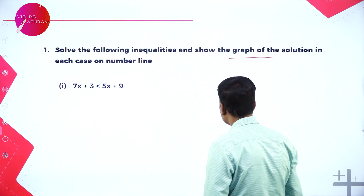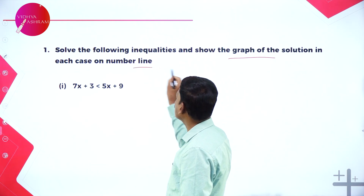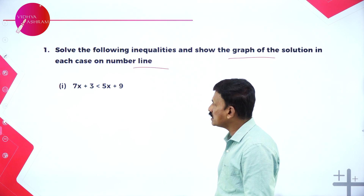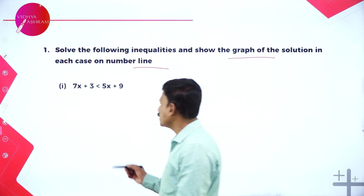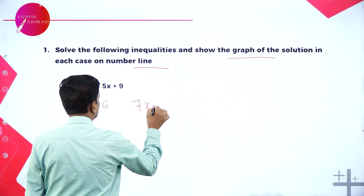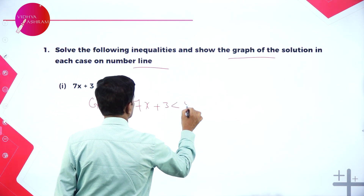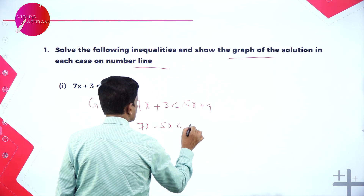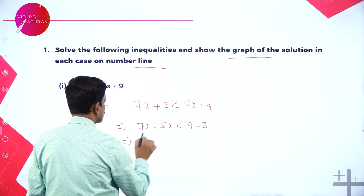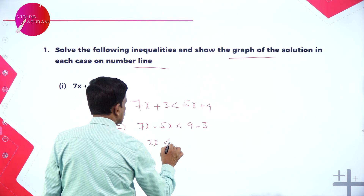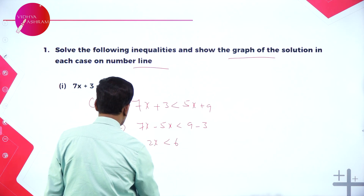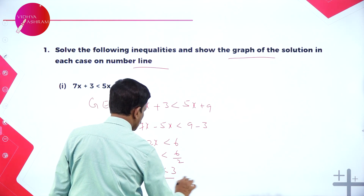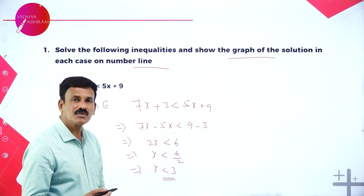Now, very important for the examination: solve the following inequalities and show the solution set on the number line. The first equation is 7x + 3 < 5x + 9. The given equation can be written as 7x - 5x < 9 - 3, that is 2x < 6, which implies x < 3.